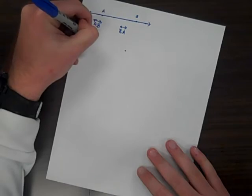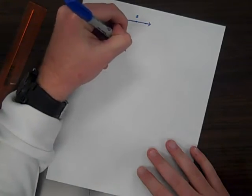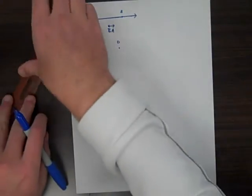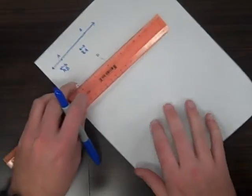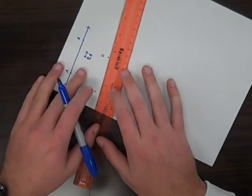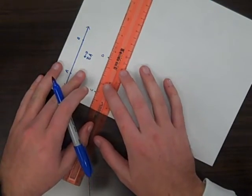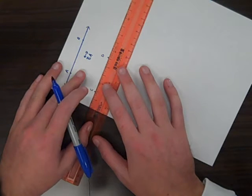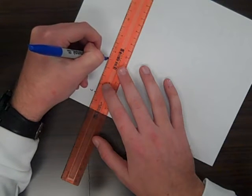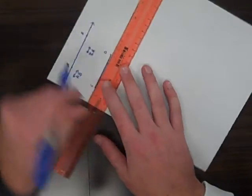I will label them point C and point D. Again, I'm going to use my straight edge to connect these two points. When connecting these two points, I start at one and I stop at the other, like such.